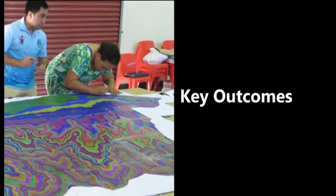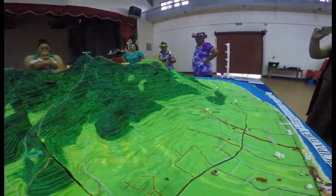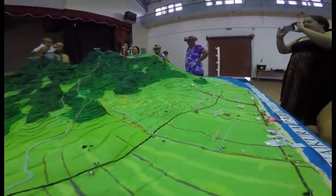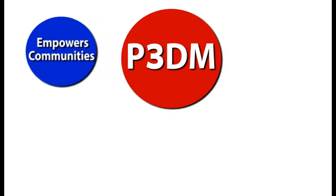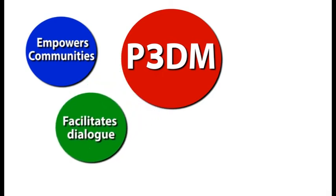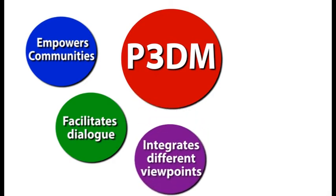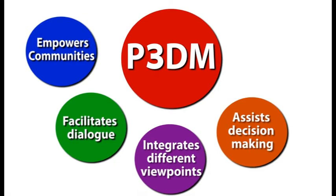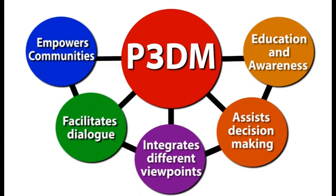In summary, the main outcomes and lessons from the participatory 3D modelling process conducted and completed for all three countries are as follows. P3DM is a cost-effective planning approach that empowers communities to actively engage in the process. The P3DM is a mechanism for facilitating dialogue between different resource users, including between the older and younger generations, and for improving coordination amongst key stakeholders. The P3DM process is a platform for bringing together different viewpoints and provides a level playing field for all involved. The P3D model is a powerful tool for informing national and community-level decisions on conservation planning and broader community development. The P3D model is also an effective tool for education and awareness and historical documentation.